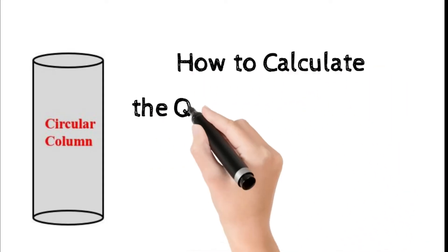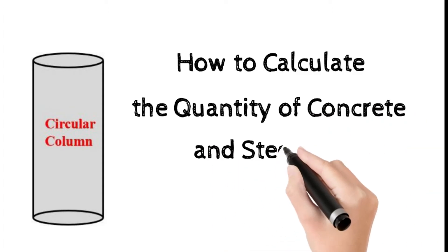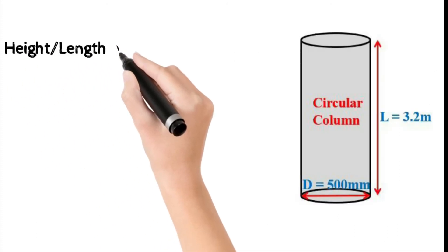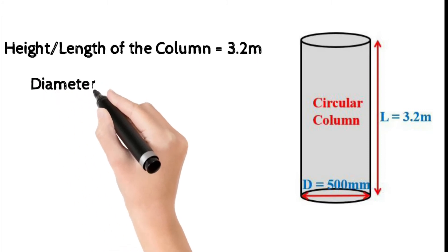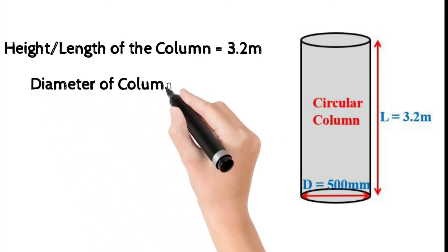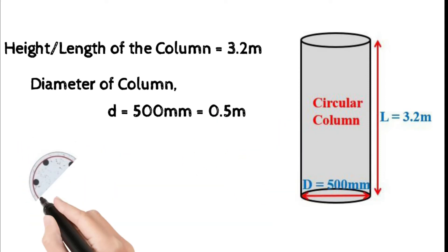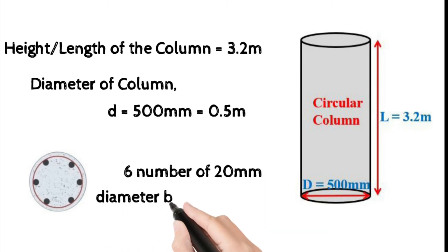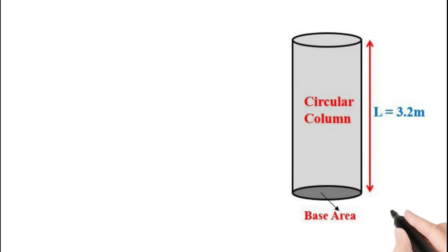Today let us see how to calculate the quantity of concrete required and quantity of steel required in case of a circular column. The data given are: the height of the column is 3.2 meters, the diameter of the column is 500 mm (0.5 meter), and 6 numbers of 20 mm diameter bars are provided in this circular column.